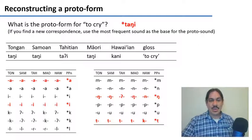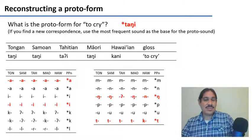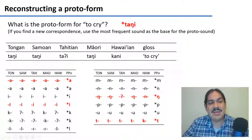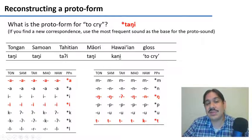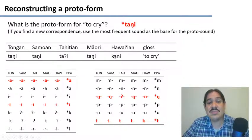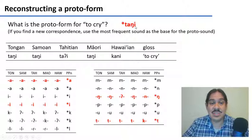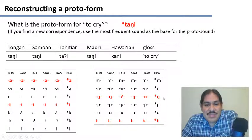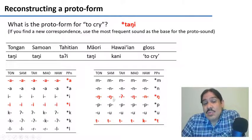There was one set of sound correspondences that we hadn't seen before — the one that has an engma, a velar nasal, in Tongan, Samoan, and Maori, and this velar nasal corresponds to the Tahitian glottal stop and the Hawaiian alveolar nasal N. So we have this set of sound correspondences for the different languages. We already knew that where we see a T in Tongan, Samoan, Tahitian, and Maori, we see a K in Hawaiian, and that all of them have an A and an E in the same positions. So what are we going to do with this sound in the middle? Let's choose the one we see more frequently as the basis for the proto-sound — the velar nasal, the engma.